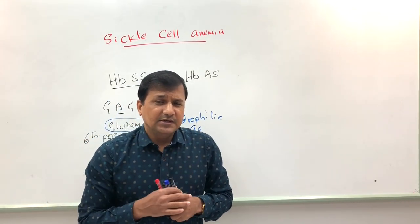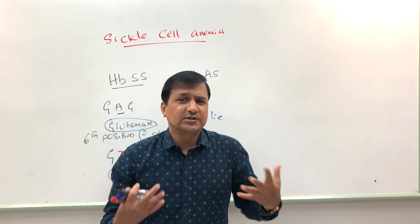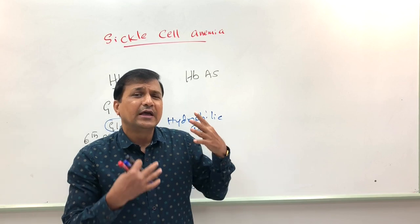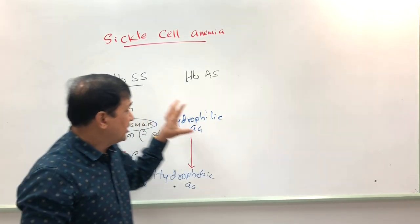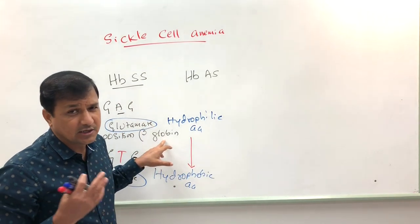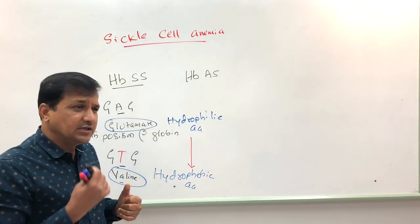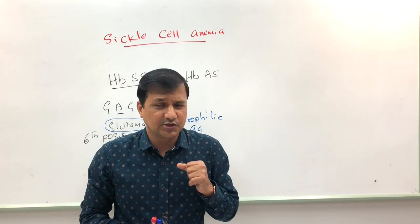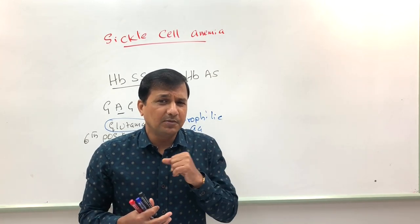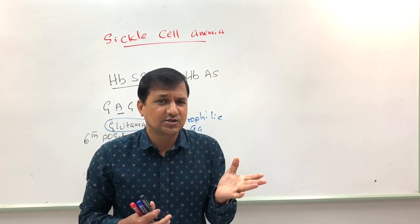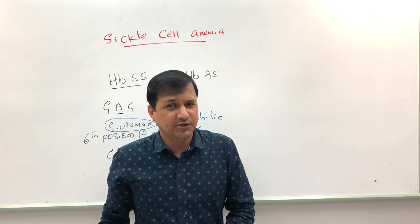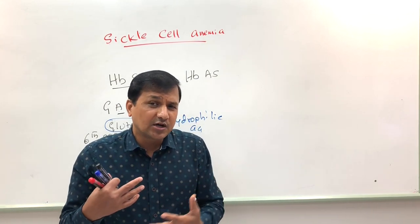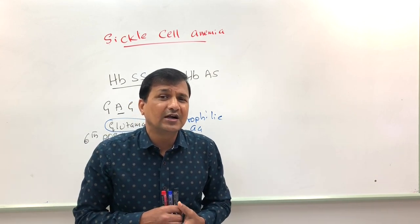Whenever hemoglobin is in the oxy condition — when oxygen is bound — there is no problem with red blood cell shape, because oxygen binds to the heme part, not the globin part. The problem comes only when hemoglobin is in the deoxy condition, when oxygen is unloaded in peripheral tissues and hemoglobin transitions into the T-state (deoxy state).